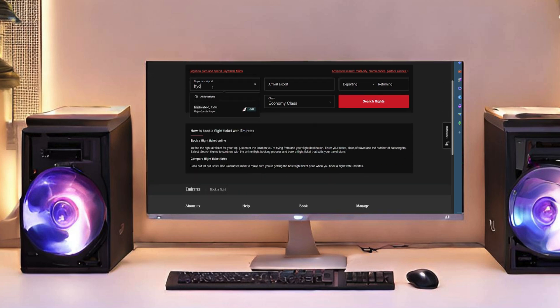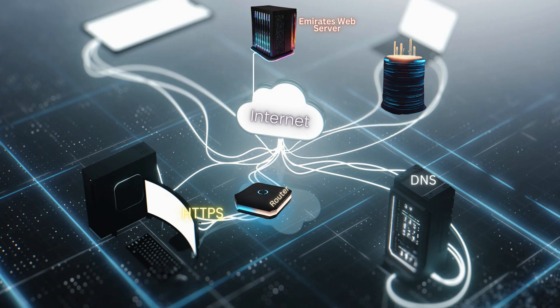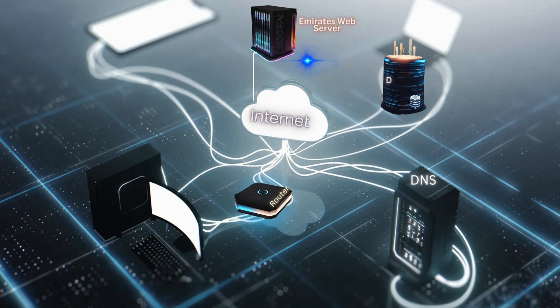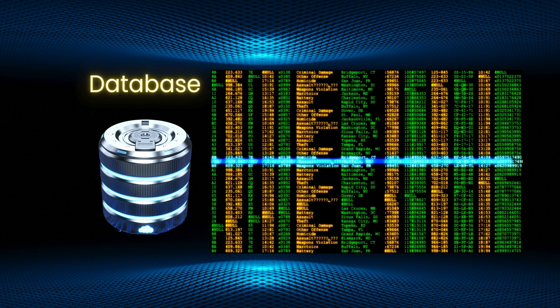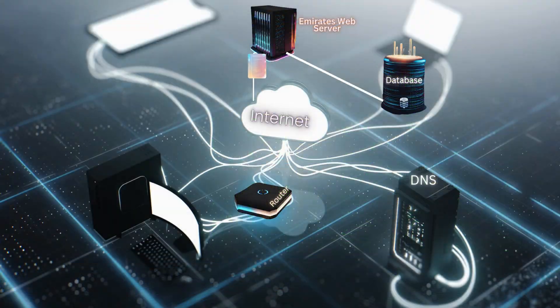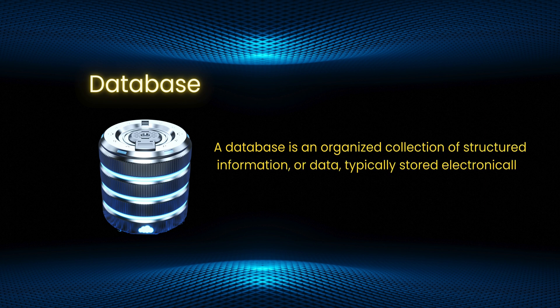It's time to search for a flight. Go to your search bar, enter Hyderabad in the departure section and Dubai in the arrival section. Plan your departure date and click search for flights. Your computer sends an additional HTTP request to the Emirates web server to retrieve information, and then it interacts with the Emirates database which contains all flight information. Once your request matches, the results are displayed on your computer. A database is an organized collection of structured information or data, typically stored electronically in a computer system.